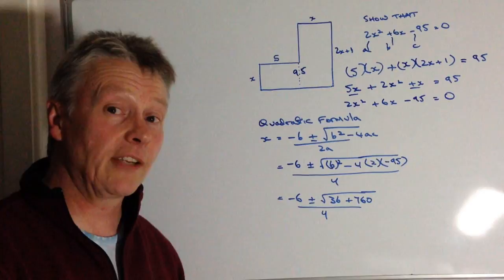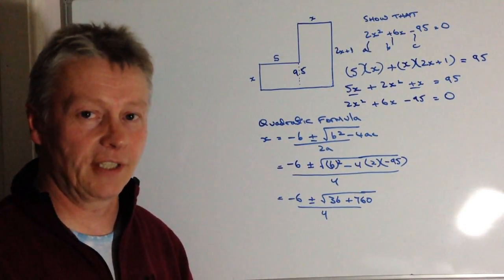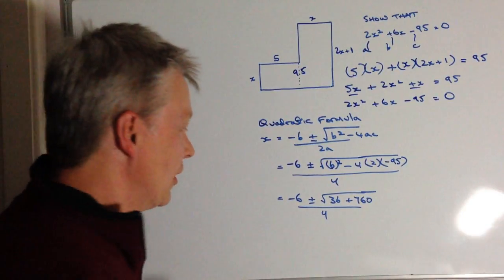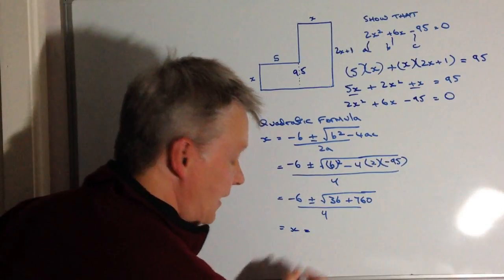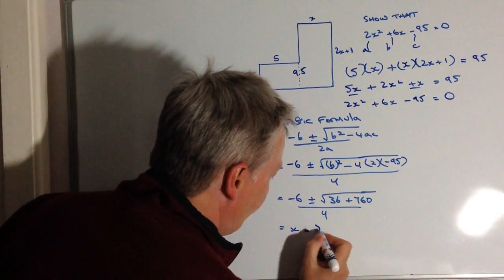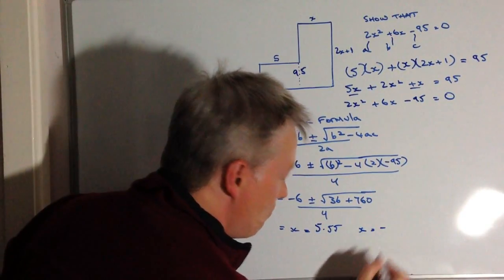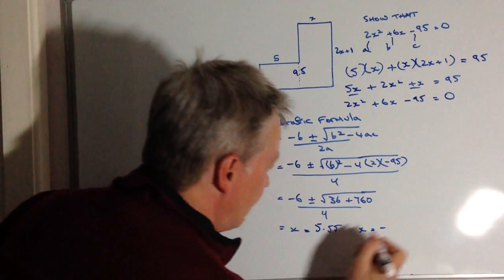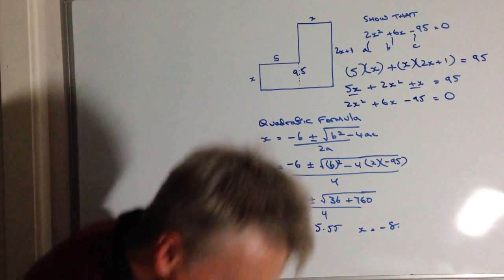And actually, that's going to give me two values of x for this particular quadratic equation. The first value, if you plug that into a calculator, is going to be where x equals, I'm sorry, I have to check this, 5.55. And x equals minus 8.55 as well.